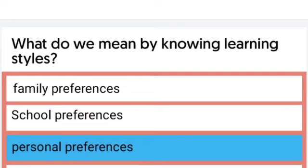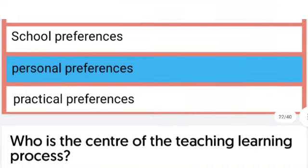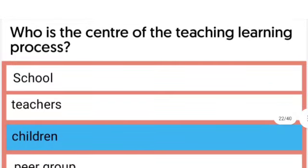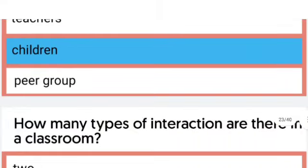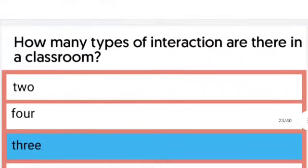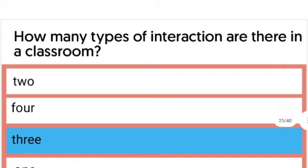The right answer is personal preferences. And who is the center of the teaching-learning process? The right answer is children. How many types of interaction are there in a classroom? There are three types of interaction in a classroom.